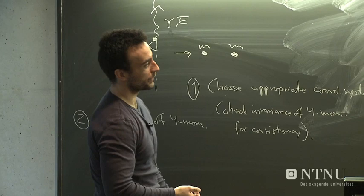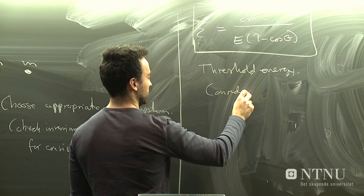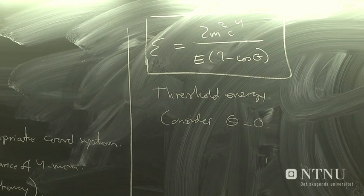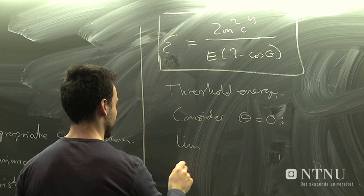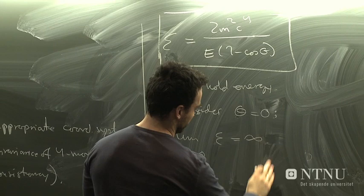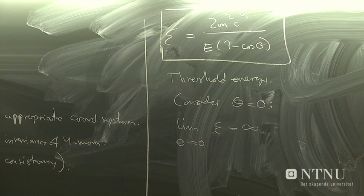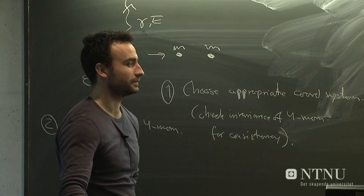One thing we commented on was that the threshold energy for the incoming photon was inversely proportional to the energy of this photon. We argued that this seemed reasonable because the more energetic this photon would be, the less energy this photon would have to provide in order to give the required rest mass after the collision. But another interesting aspect is the angular dependence of this energy. So consider the situation where theta equals zero. What happens then is that the threshold energy diverges, becomes infinite.